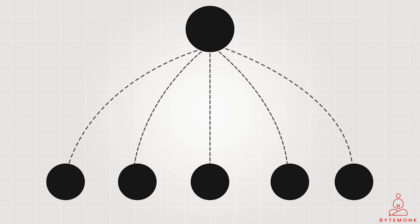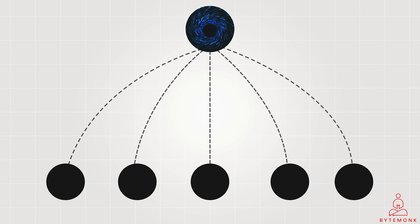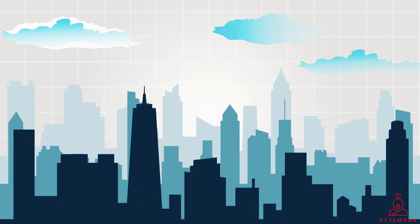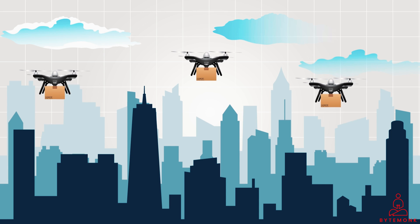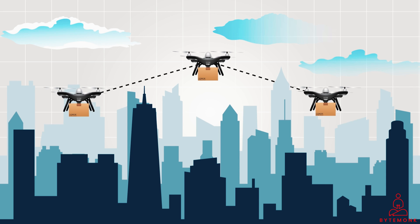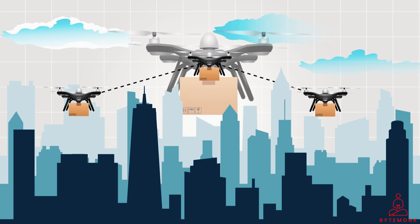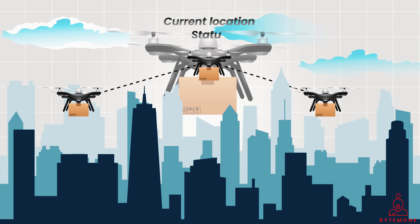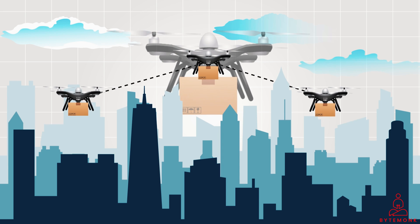Leader election is the simple idea of giving one process or machine in a distributed system some special powers, such as the ability to assign work or handle all requests. Think of it as electing a president for a committee. Heartbeat is a periodic signal sent by the leader to confirm it's alive. For example, imagine a fleet of delivery drones tasked with making deliveries. The drones use a leader election algorithm to choose a single leader drone based on factors like battery life, processing power, or central location. The leader drone periodically sends out a heartbeat message containing its current location and status, and all other drones listen for and update their internal maps based on these heartbeats.